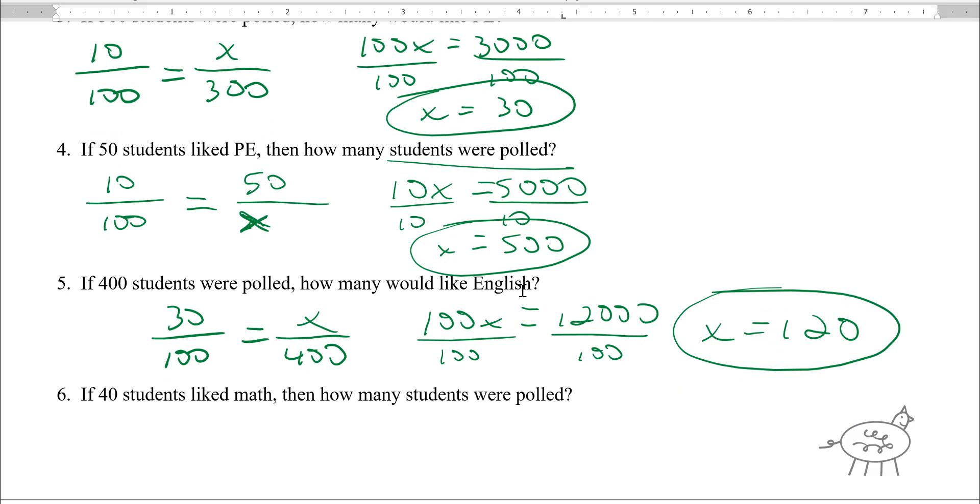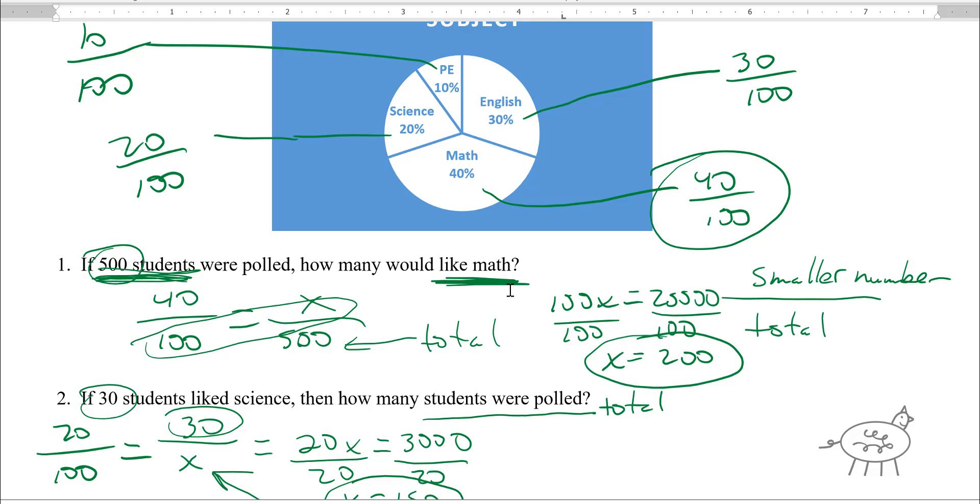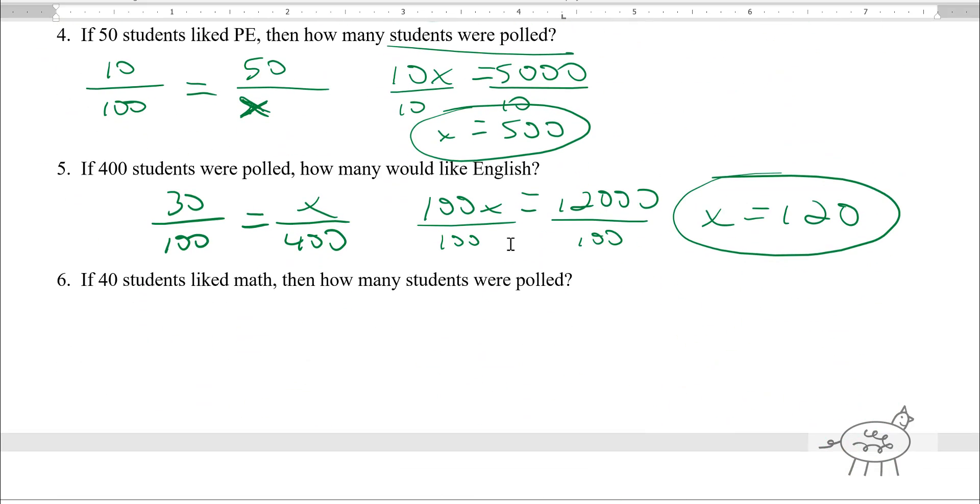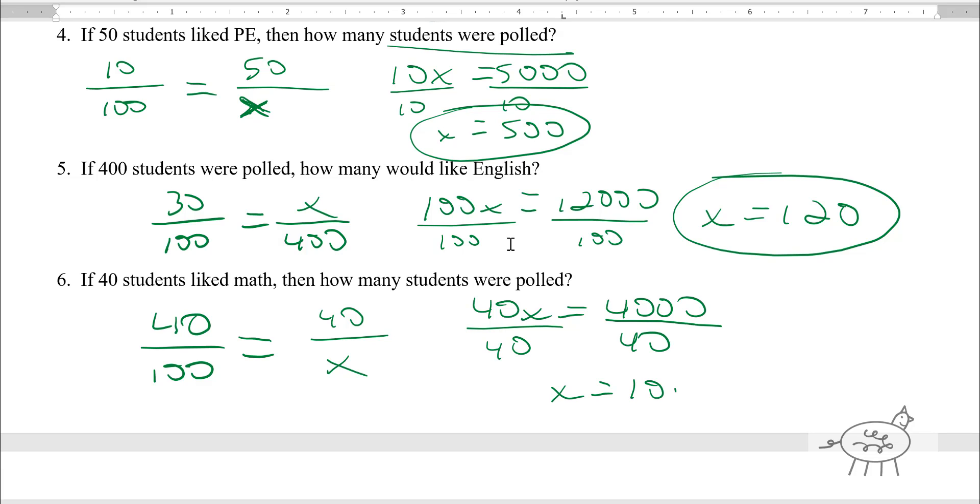Last one. If 40 students like math, let's go to math. Math is 40%, so it's 40 over 100. 40 like math, so the 40 goes on top. How many students were polled? So you cross multiply, 40x equals 4,000, divide by 40, x is equal to 100.